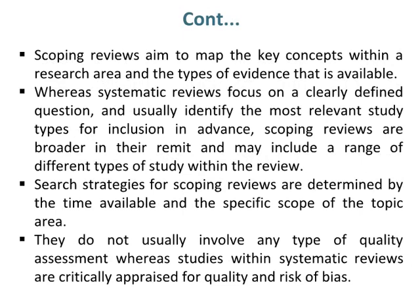Whereas systematic reviews focus on a clearly defined question and usually identify the most relevant study types for inclusion in advance, scoping reviews are broader in their remit and may include a range of different types of study within the review. Search strategies for scoping reviews are determined by the time available and the specific scope of the topic area. They do not usually involve any type of quality assessment, whereas studies within systematic reviews are critically appraised for quality and risk of bias.